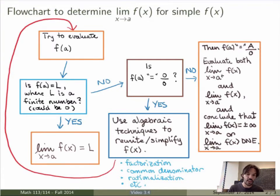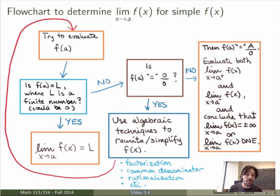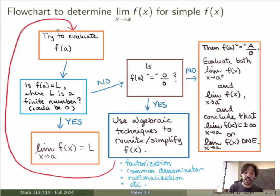To simplify your function you could use factorization, put things on a common denominator, or rationalize the denominator if you have fractional powers or square roots. There's no algorithm to tell you what technique to use — basically the more examples you do, the better you will get at it. Once you've simplified the expression, go back to the beginning and try to evaluate again. If you get a finite number, you're done. If you don't, you just go back through the flowchart.